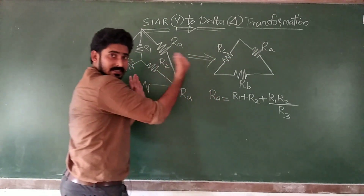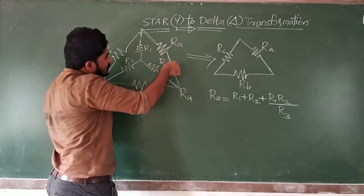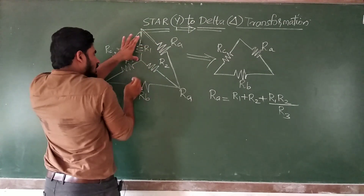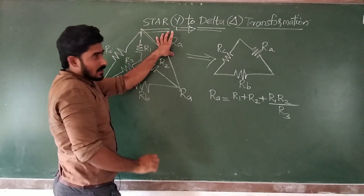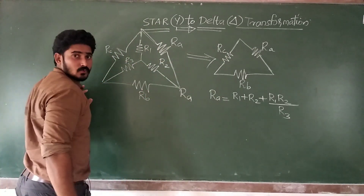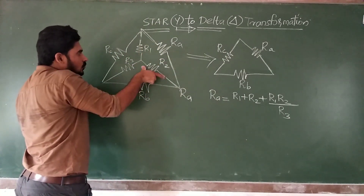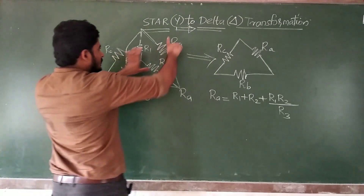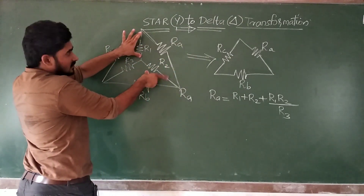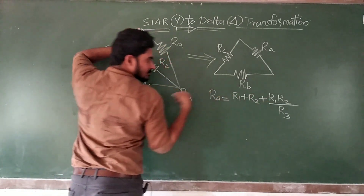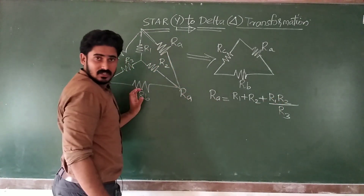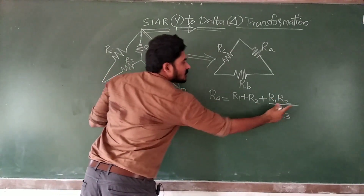So if you are transforming from star to delta, the values of resistances are changed. R1 is changing into Ra. To find out the value of Ra, you take R1 and R2 — the two resistors connected to Ra — add them up, plus multiply them (R1 into R2), and divide that product by the third resistor R3.